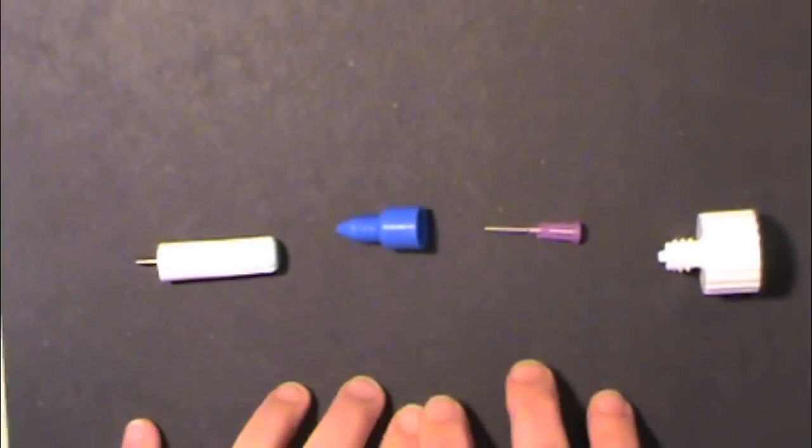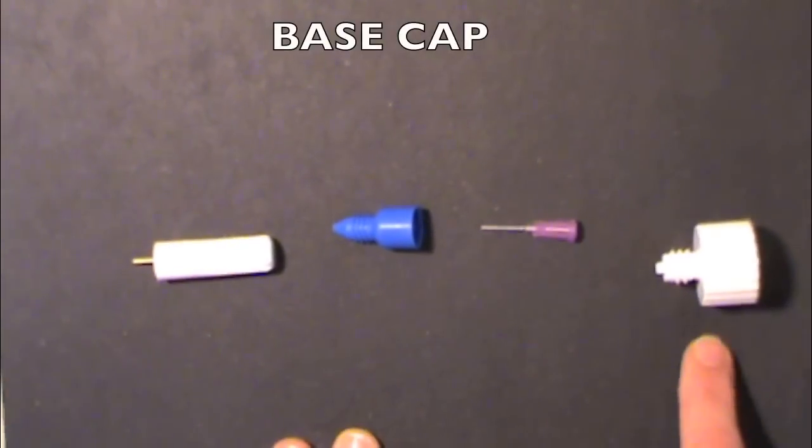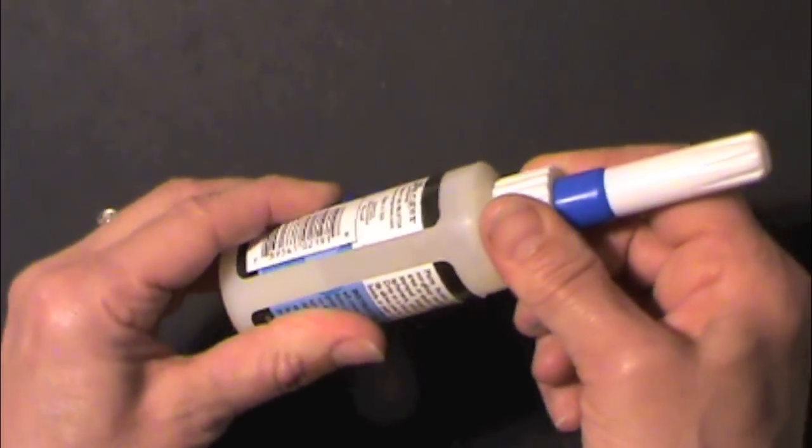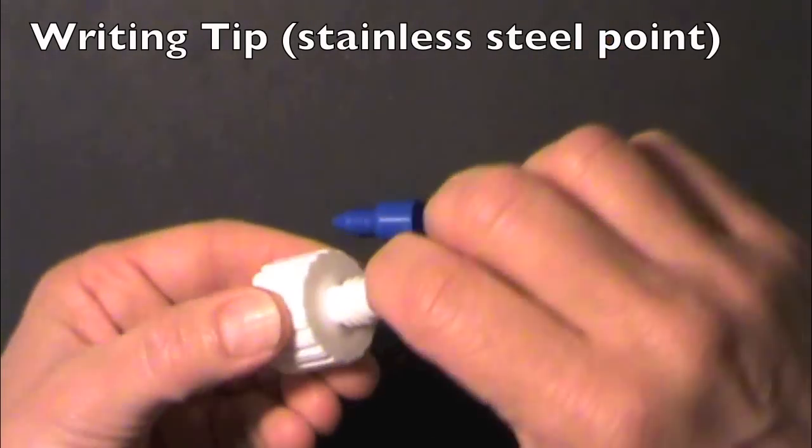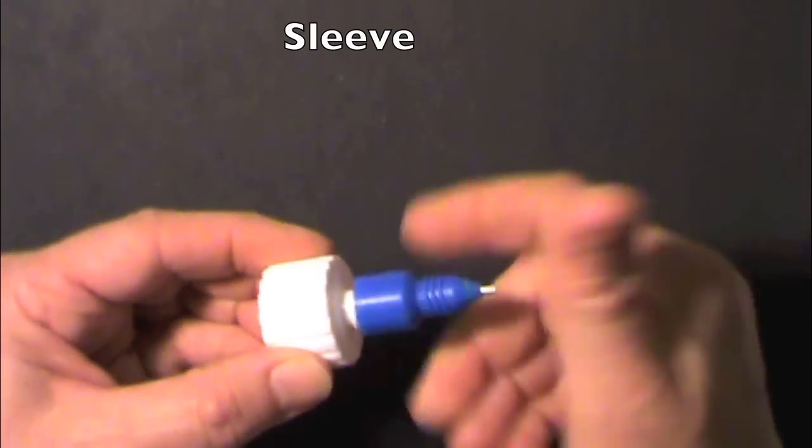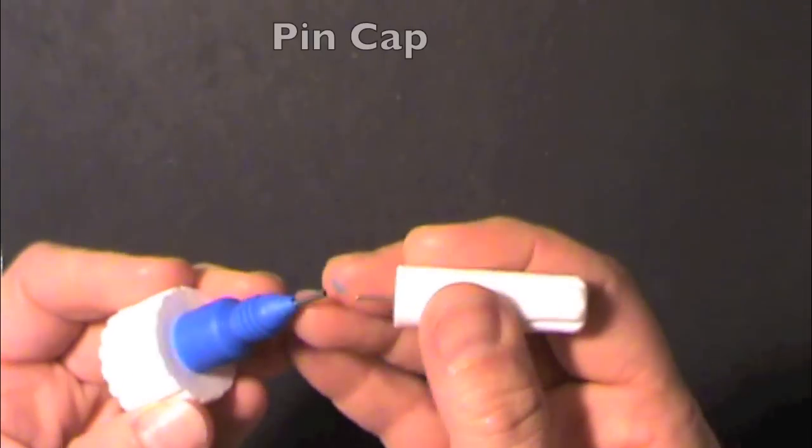So let's explore this cap in detail. It's got four parts: the base cap which screws on to the bottle, the writing tip which just twists on to the cap, the sleeve which screws on and the pin cap.